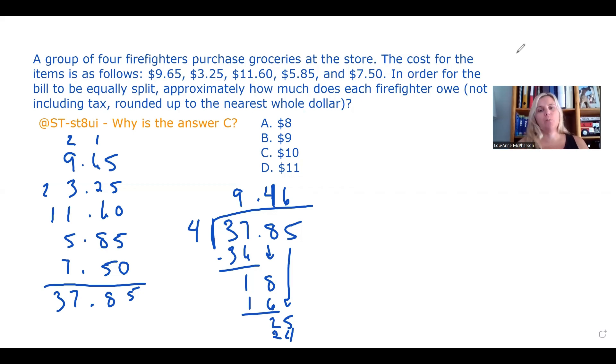When we're breaking down this word problem, we can see that we're working with decimals. And there are two operations. First, we have to add the cost of the individual items up. And then we have to divide.